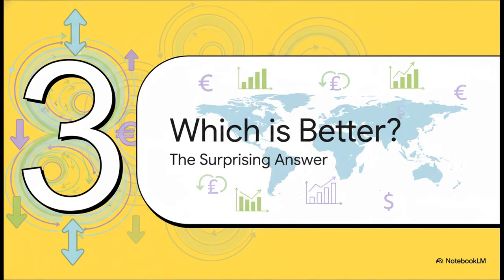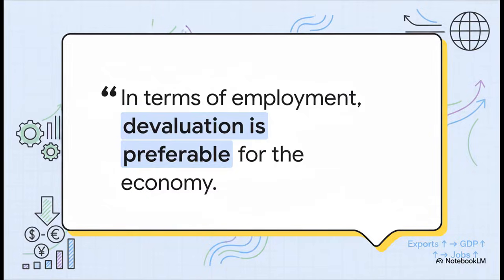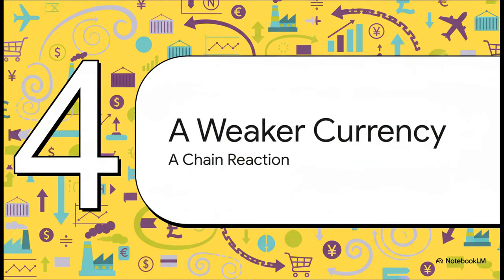We know the difference between a weak currency and a strong one, and that brings us right back to our huge multi-billion dollar question: which one is actually better for the economy? And here's the twist — the answer might actually surprise you. From a big picture macroeconomic point of view, especially when we're talking about jobs, a weaker currency is often considered better for the economy. It feels totally backwards, but there's a real logic to it — it's not random at all.